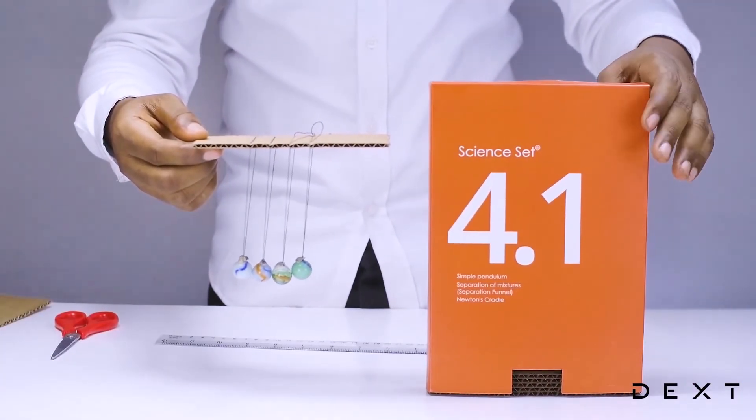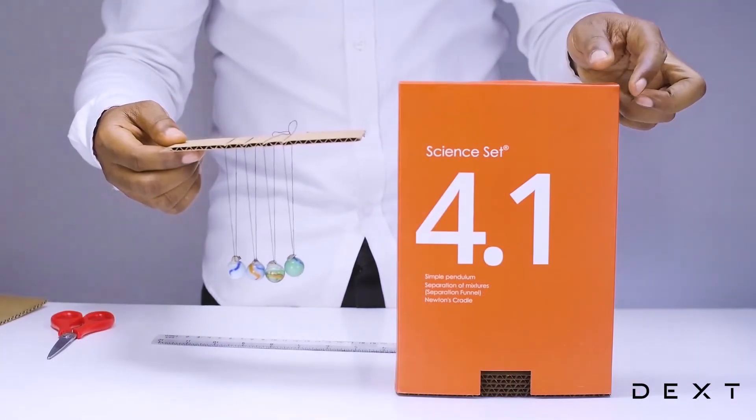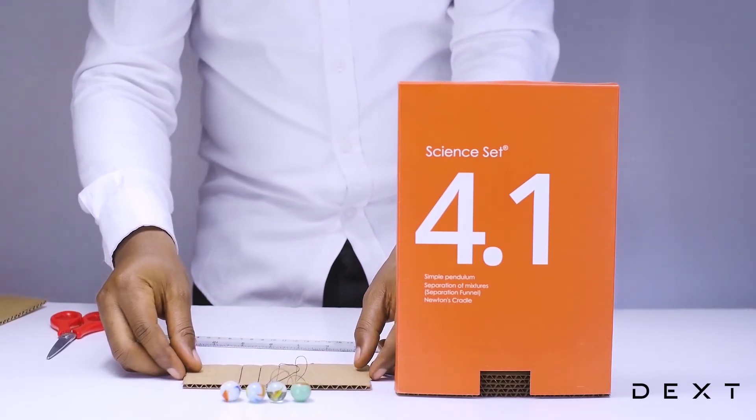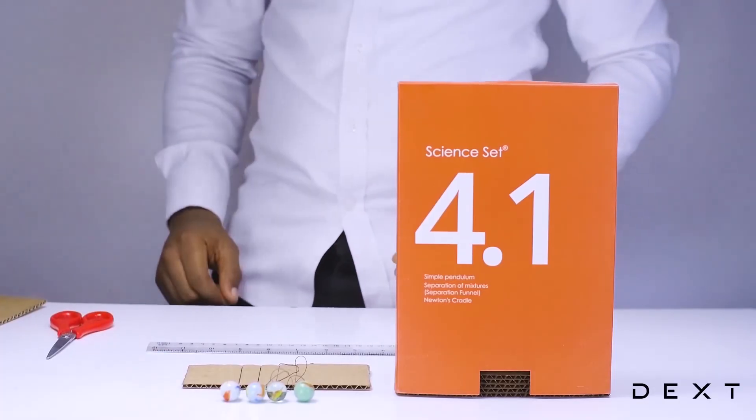Go ahead and play with your Newton's Cradle. As always, this has been a tutorial using the Dex Sign Set 4.1. See you in the next video.